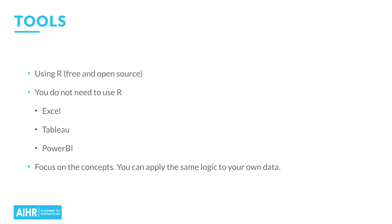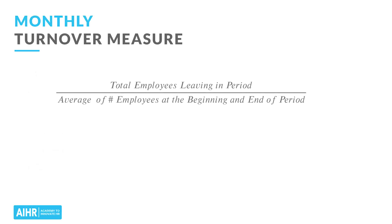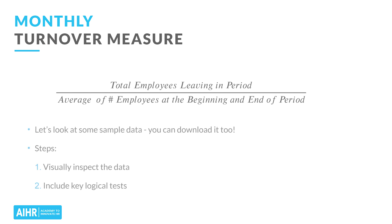From our first webinar, you remember the basic idea of the turnover measure — it's just the number of people leaving voluntarily in a period divided by the average number of employees in that same period. Now let's work through a detailed example to see how this is really done in practice. We'll start by taking a look at some sample data. You can download this sample data if you want to try these exercises at home, which I strongly recommend.